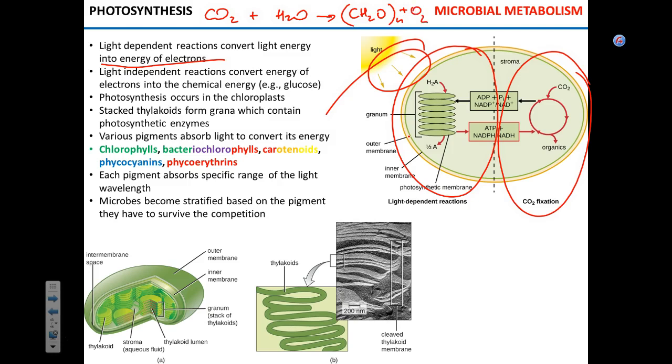Where does photosynthesis happen? In the chloroplasts. Here they are - the chloroplasts. It's another organelle, like mitochondria, that has two membranes - you see the outer and the inner membrane. Inside of the chloroplasts are stacks of plate-shaped structures called thylakoids.